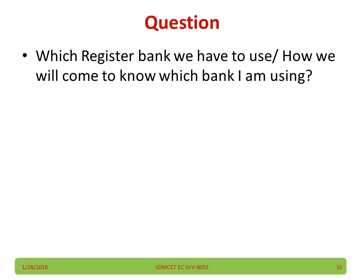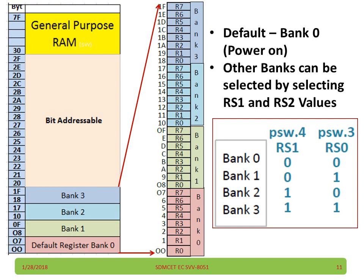A question may come in your mind: which register bank do we have to use, or how will we know which bank we are using? Bank selection is done by selecting a particular combination of PSW.4 and PSW.3. The PSW is a register whose fourth and third bits you can make 00, 01, 10, or 11 based on which bank you want to select. By default when you switch on the power, the bits will be 00, so by default you will access bank 0. Other banks can be selected by choosing the appropriate combination, but whenever you switch on the power, bank 0 is selected by default.